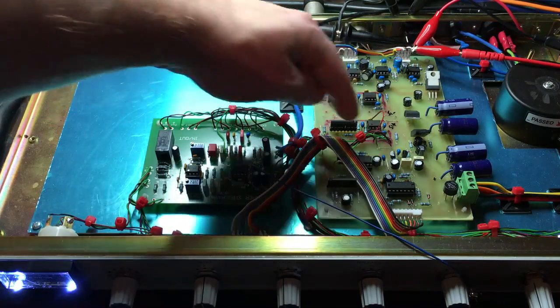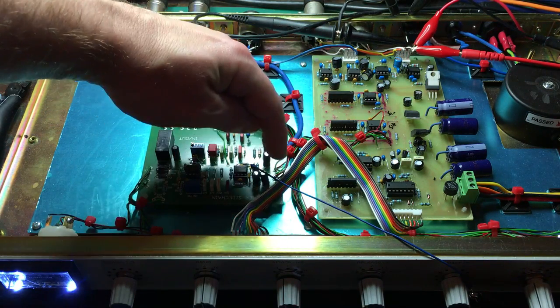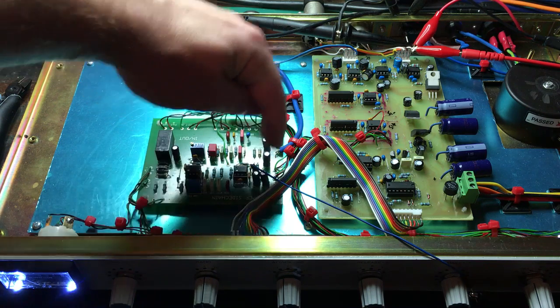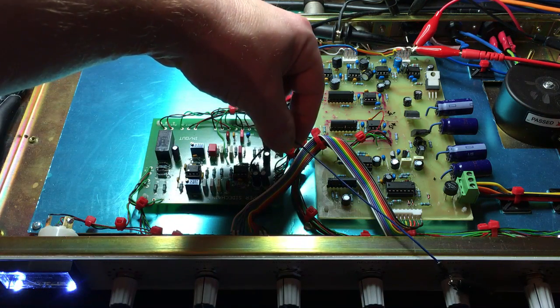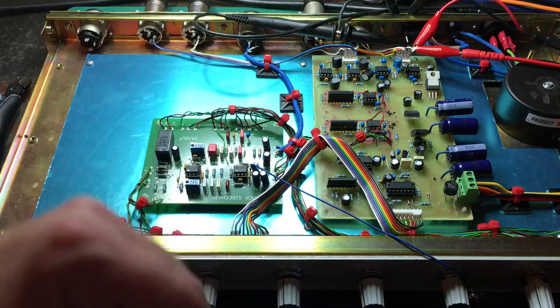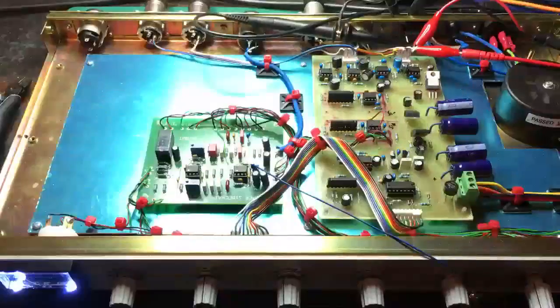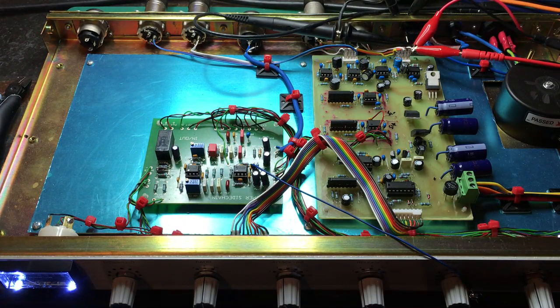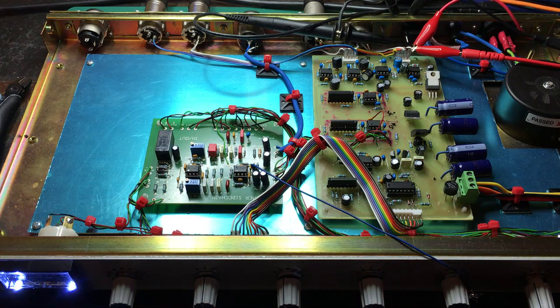And if we follow that line there we can see that this goes to a 47k, so I've taken a breadboard wire and soldered it onto that end of the resistor so that can go into the second channel of the Spectrum Analyzer.